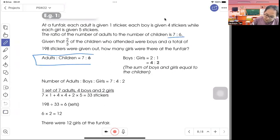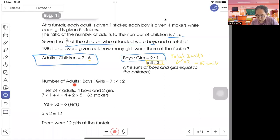Given that 2 thirds of the children who attended were boys, the ratio of boys to girls becomes 2 to 1. Because here children is 6, and 2 plus 1 is only 3 units, you need times 2 to get 6 units. That's why the ratio now becomes 4 to 2. So the number of adults to boys to girls, the ratio is 7 to 4 to 2.